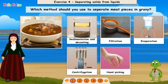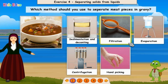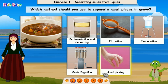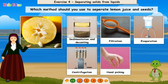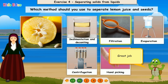Which method should you use to separate meat pieces and gravy? Sedimentation and decanting. Filtration. Evaporation. Centrifugation. Handpicking. Answer: handpicking. Great job! Which method should you use to separate lemon juice and seeds? Filtration. Great job!